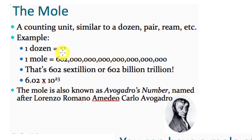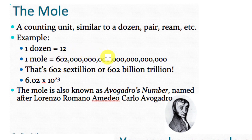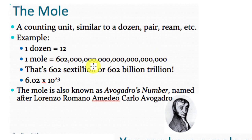If we had two dozen, you'd know that means twenty-four. In chemistry we use the word 'mole' in the same fashion. When we say we have one mole of something, we have 602 sextillion — or 602 billion trillion — things. That's a very, very big number that you can't really wrap your brain around, so we don't write it that way because it has way too many zeros.